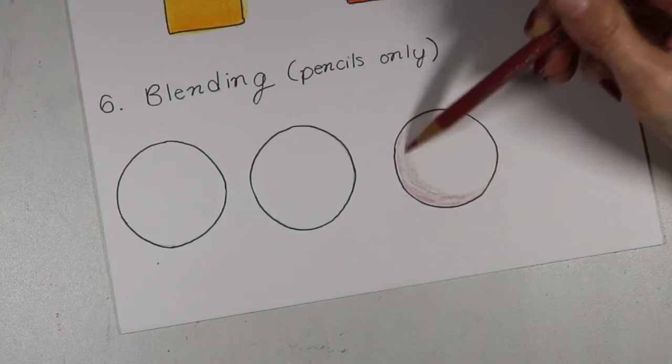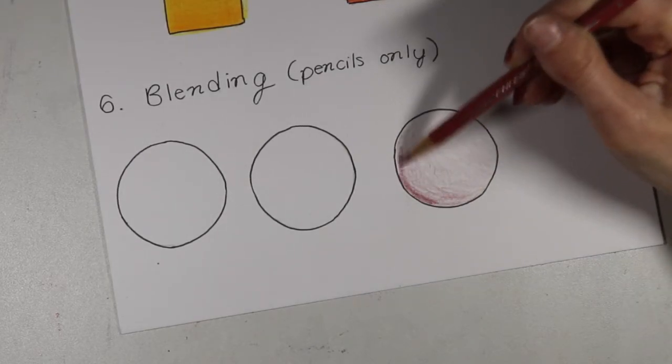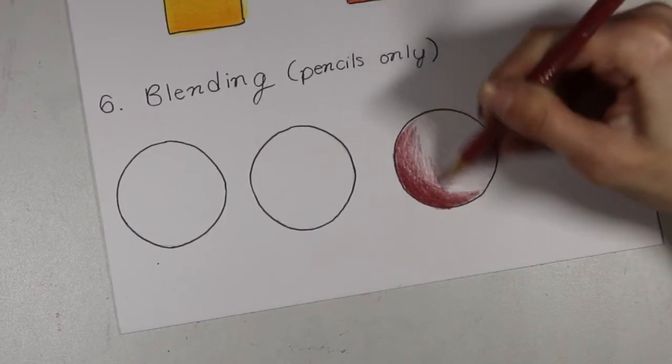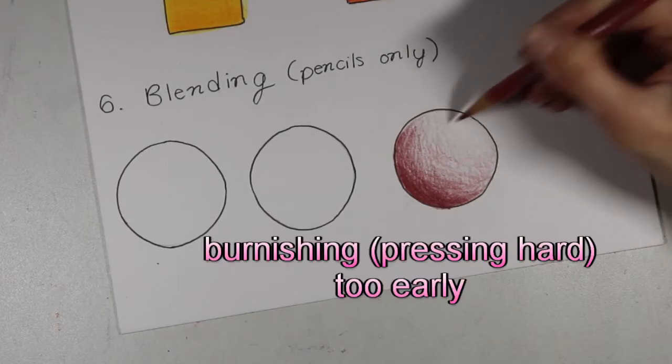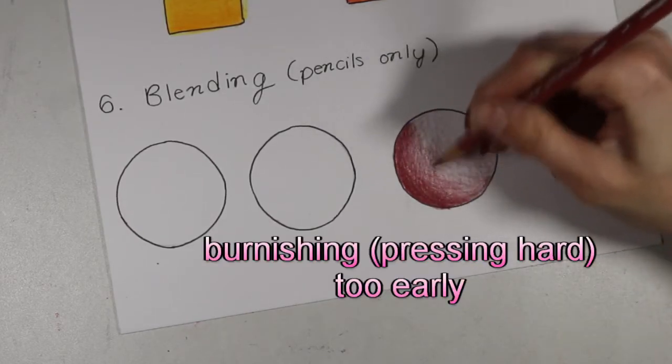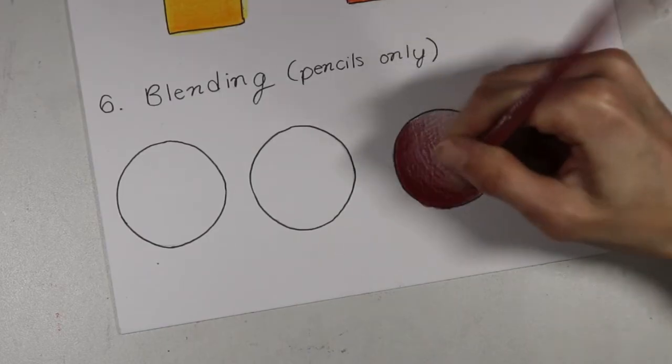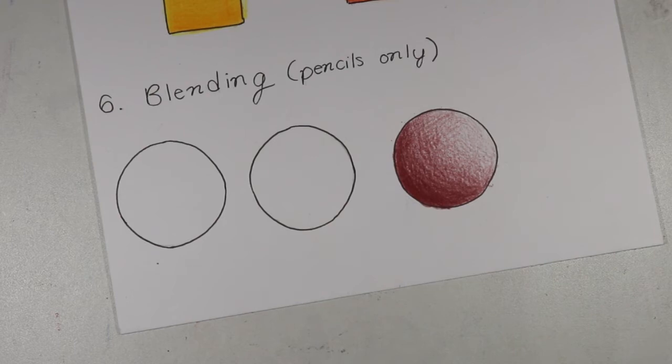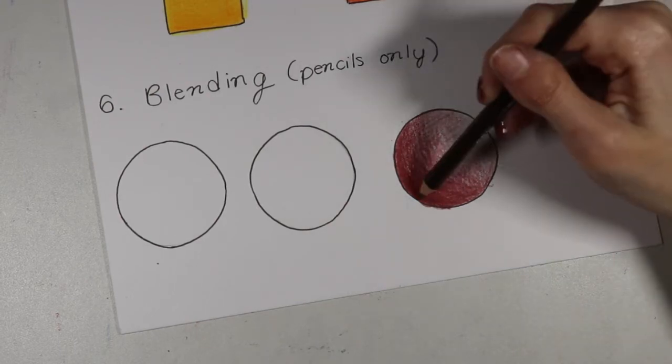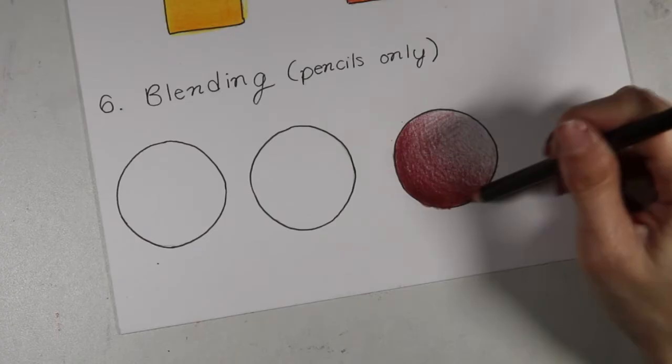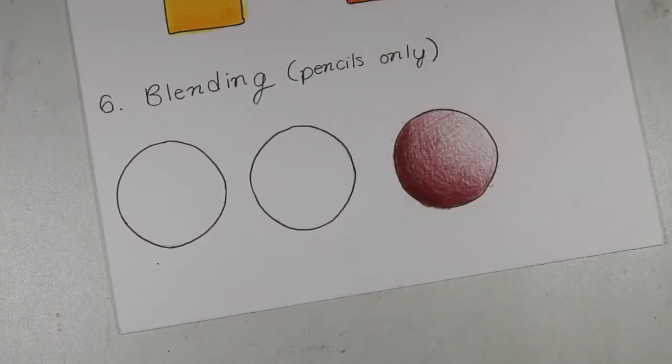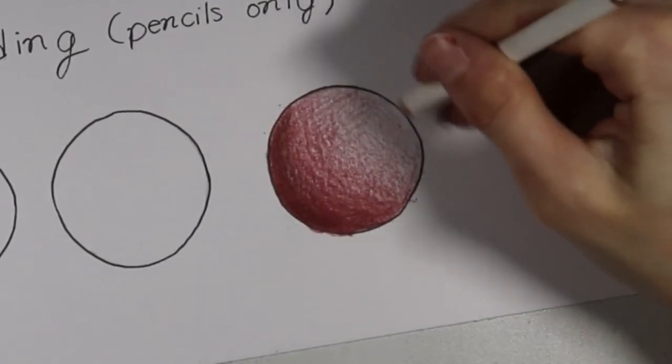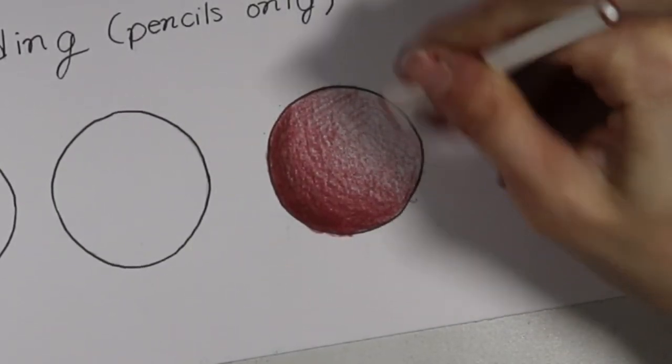I have a decent blend here, but now I want to go in with a darker color because I realized that this isn't dark enough. I'm going to go in with a dark brown pencil. For light areas, a lot of people like to burnish with the white pencil. So I'm going to do that. Now the white pencil has kind of decreased my saturation a bit.